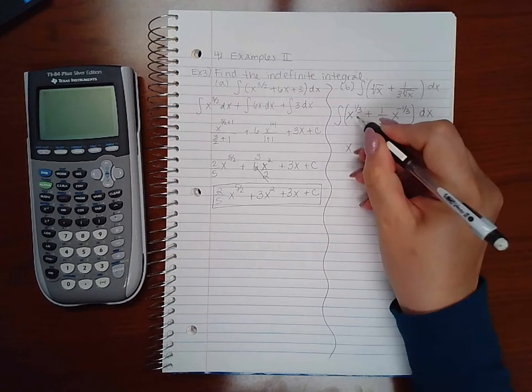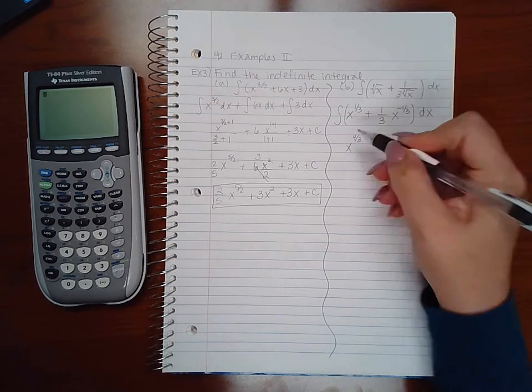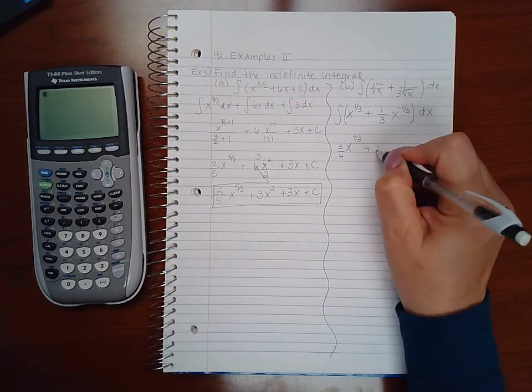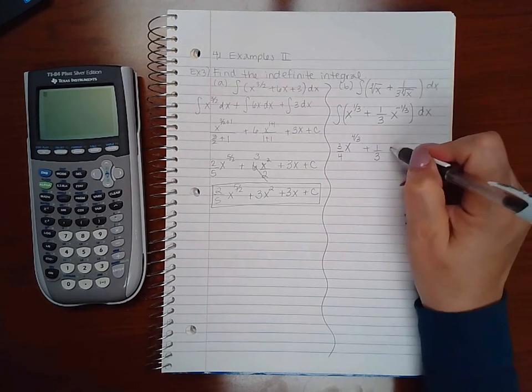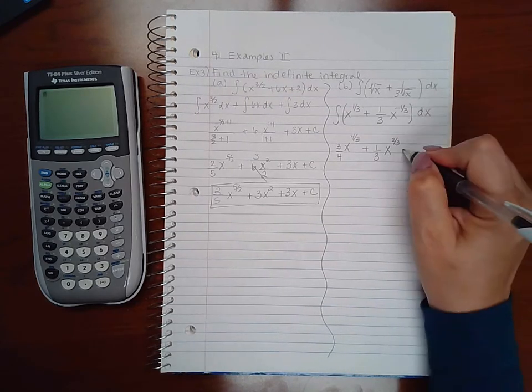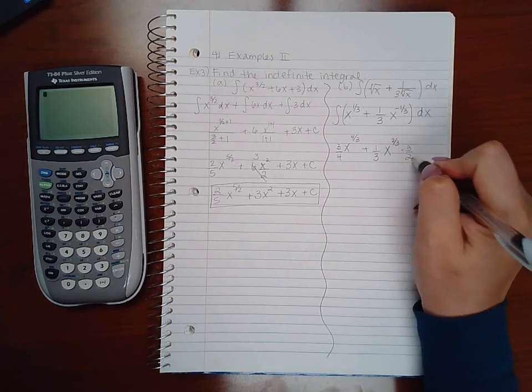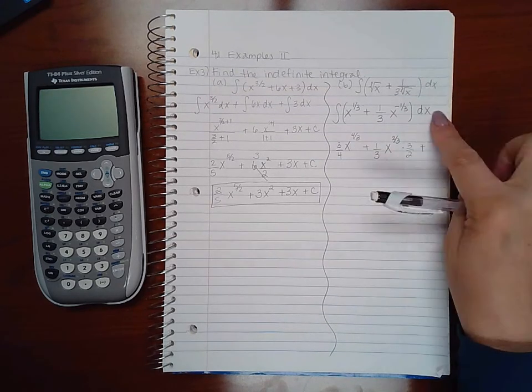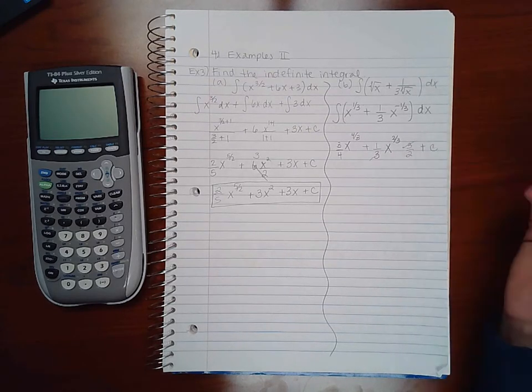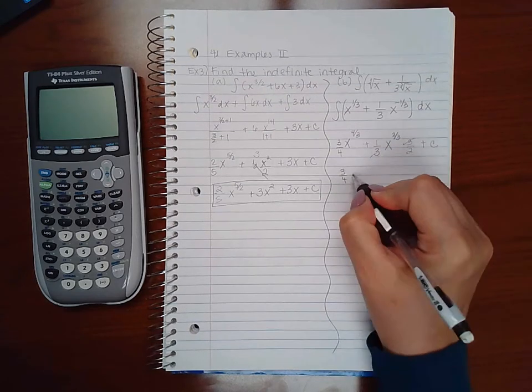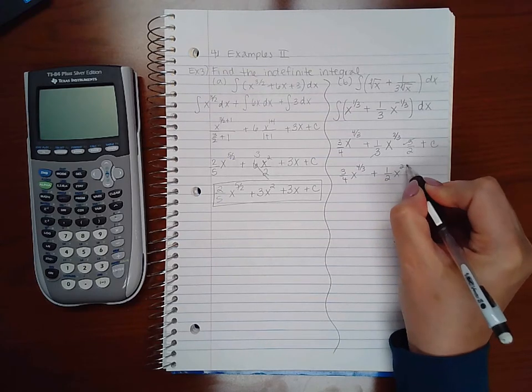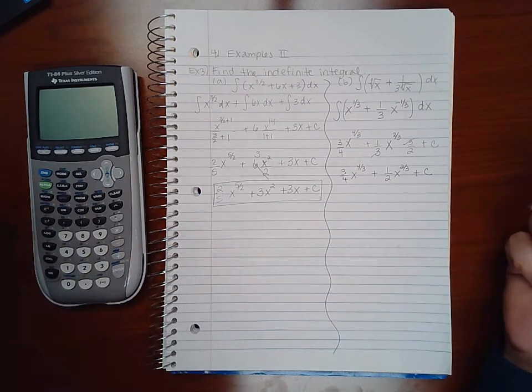If I add one to this exponent, I will get four-thirds. If I divide by four-thirds, it's the same as multiplying by three-fourths. Here I have a constant multiplier in front, but if I add one to this exponent, I get two-thirds. If I multiply by its reciprocal, I get three over two. Because I took the anti-derivative, I do need to put my plus C constant. Well, this three reduces with this three in that term, so I end up with one over two x to the two-thirds plus C.